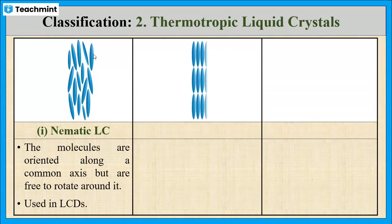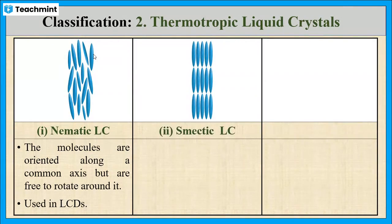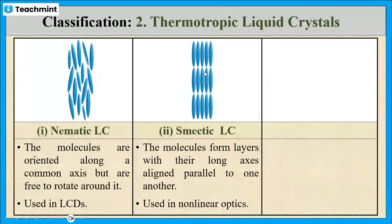The second type is smectic liquid crystals. In this type, the molecules are oriented along a common axis and they are parallel to each other. This type of liquid crystal is used in non-linear optics.